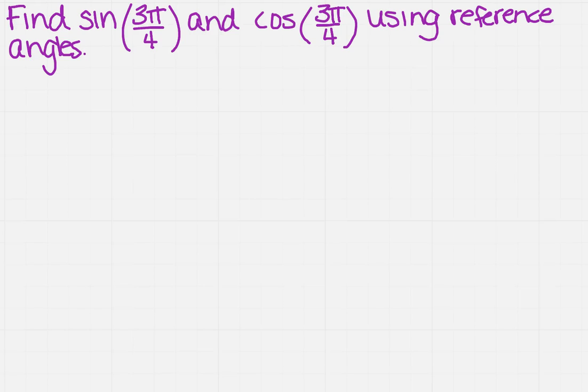I need to find the sine of 3 pi over 4 and cosine of 3 pi over 4 using reference angles. So how in the world am I going to do that? Well, the first thing I need to do is figure out where is 3 pi over 4.